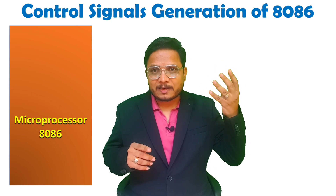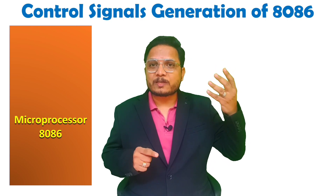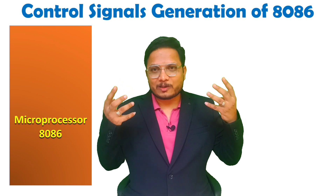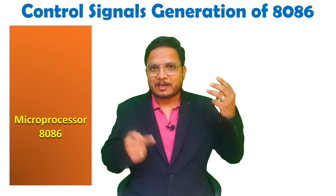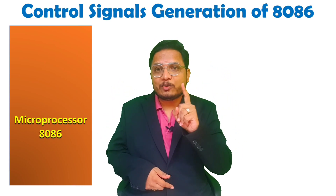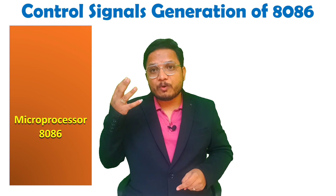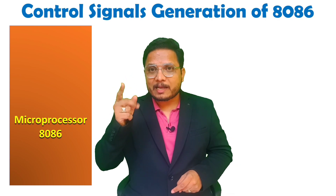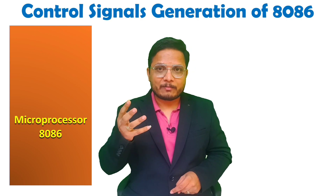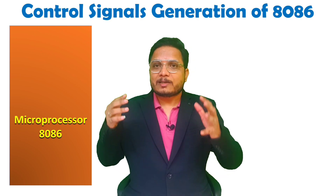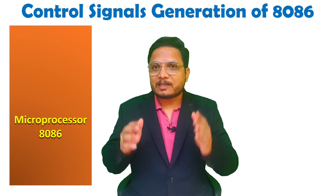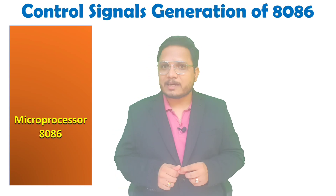If there were 4 pins, the microprocessor would have directly given those 4 control signals. But since we have only 3 pins, we need to generate those 4 control signals — Memory Read, Memory Write, IO Read, and IO Write. Let us understand how to do this generation of control signals.